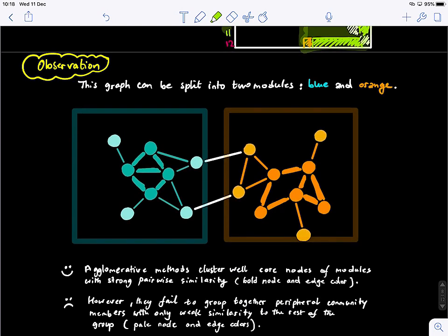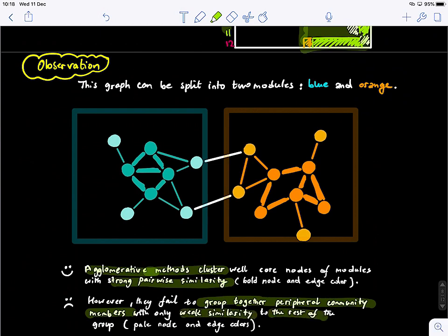Agglomerative methods, for example, if we want to use hierarchical clustering, we will see that the core nodes of modules with strong pairwise similarity, they are maintained. So this is good. However, these methods fail to group together peripheral community members.